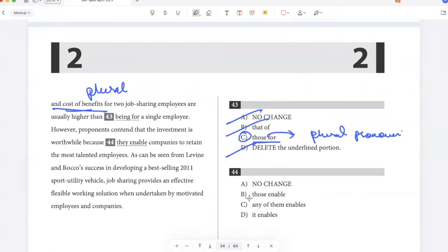However, proponents contend that the investment is worthwhile because they enable companies to retain the most talented employees. So I need to choose something that can refer to investment. So because it enables, the investment enables companies to retain the most talented employees. They or those are plural, so that doesn't make sense. And any of them doesn't convey the right meaning. I just need to say investment in job sharing enables companies. So D is the best answer.